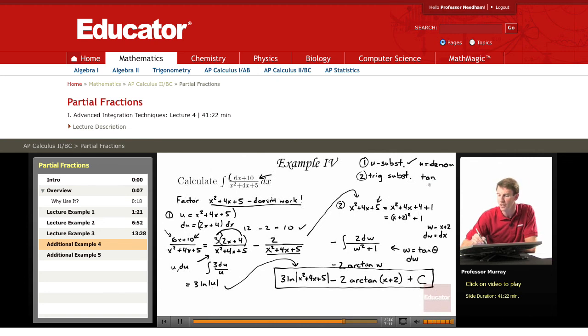Remember, we had three kinds of trig substitutions. We had tangent, sine, and secant. But when you have a problem like this, you'll never get sine and you'll never get secant.